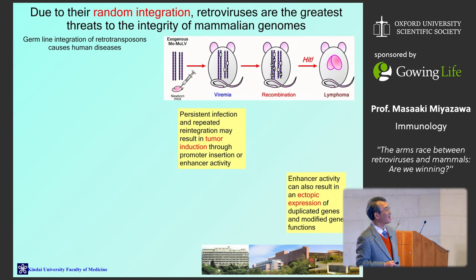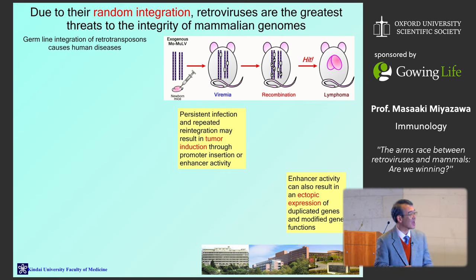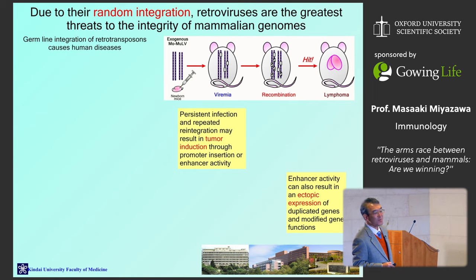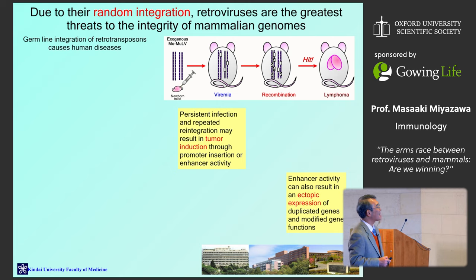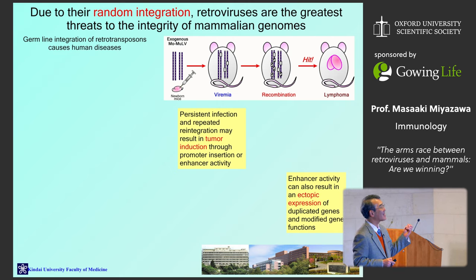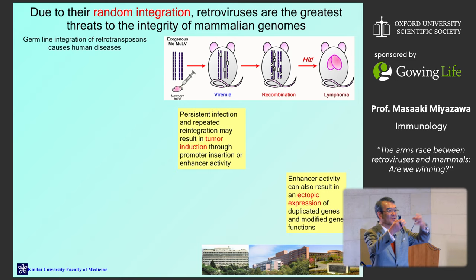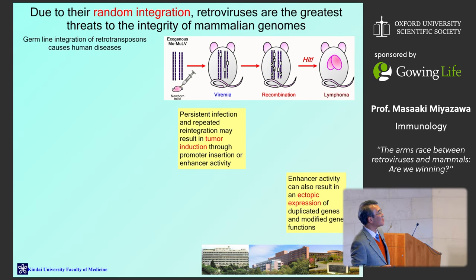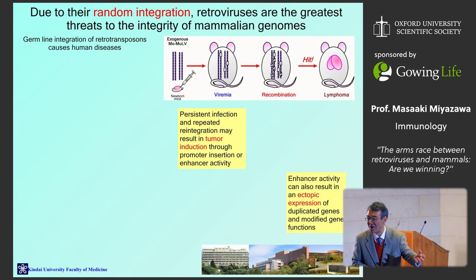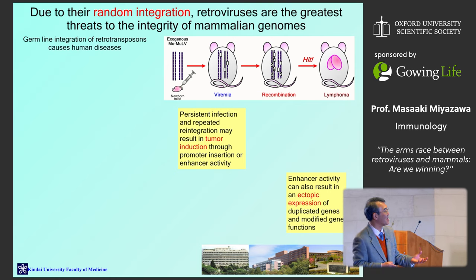Many known diseases are associated with germline integration of endogenous retroviruses that happened millions of years ago — for example hemophilia, X-linked agammaglobulinemia, X-linked SCID, and some breast cancers, all caused by mutation or disruption of gene expression due to retroviral integration. Newly infecting retroviruses can also cause somatic cell mutations. For instance, infecting newborn mice with Moloney murine leukemia virus leads to repeated rounds of integration; the growing number of integration sites eventually hits a gene associated with cell proliferation or differentiation, causing lymphoma or leukemia.